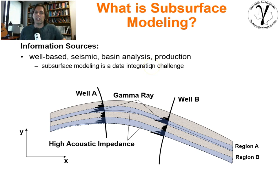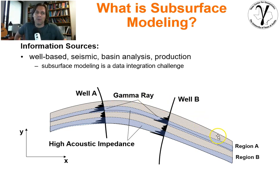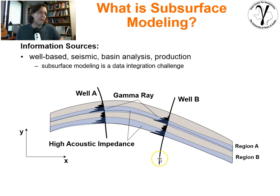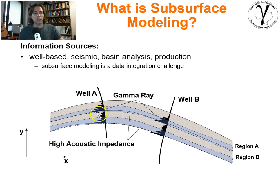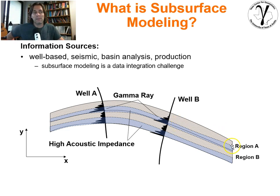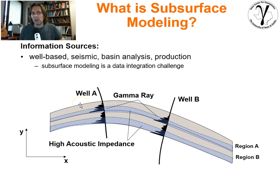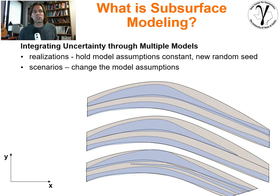Subsurface modeling is all about a data integration challenge. We have a volume of interest and a property of interest — say, porosity. We have well logs at wells A and B; gamma ray indicates a fining-upward trend, coarser-grained going to finer-grained, becoming more shaly as the gamma ray increases. We also have seismic information, where the blue regions may be identified as more sand-rich and other regions as more shale-rich. We integrate all these different types of information together.